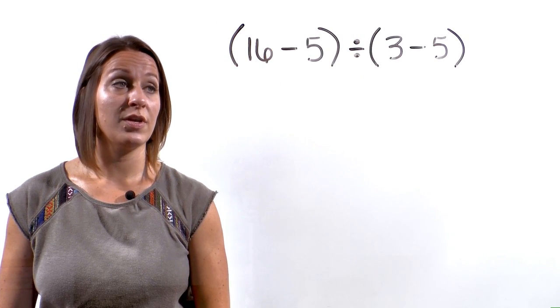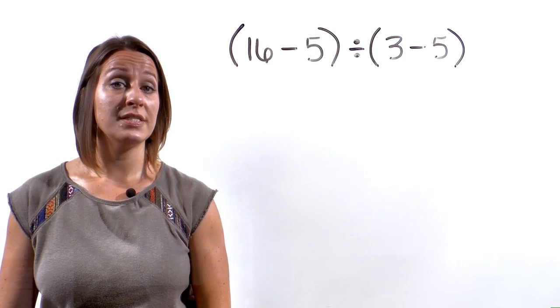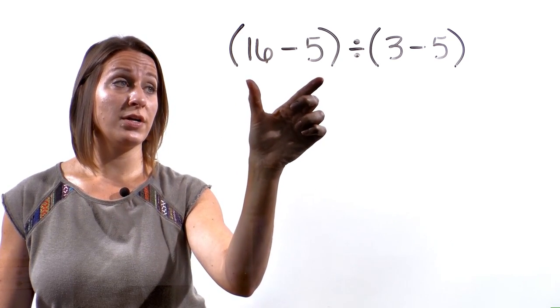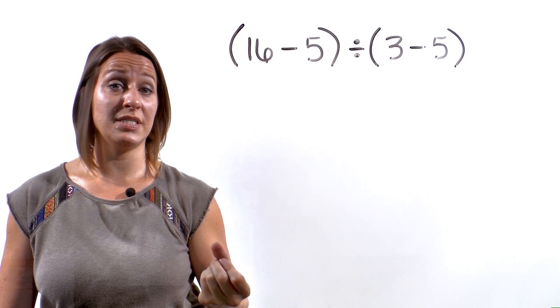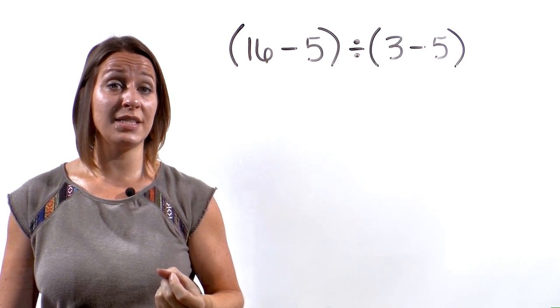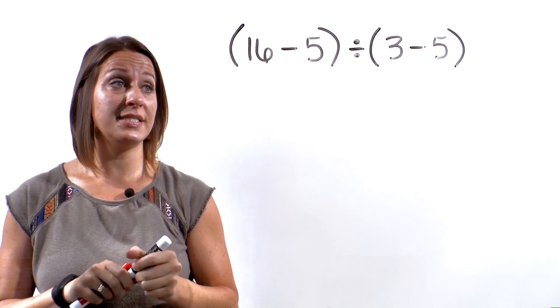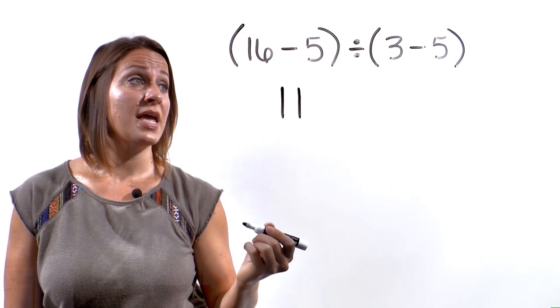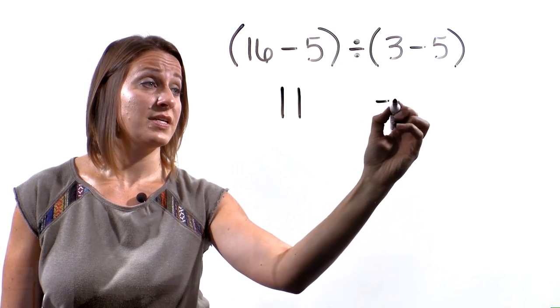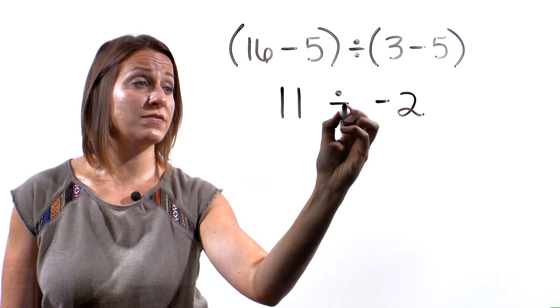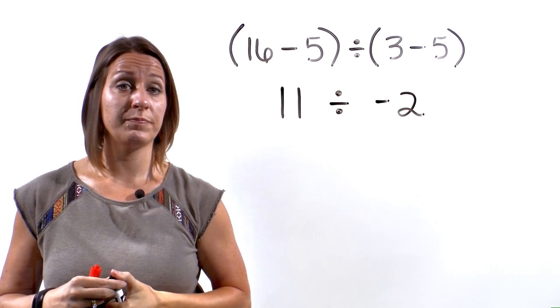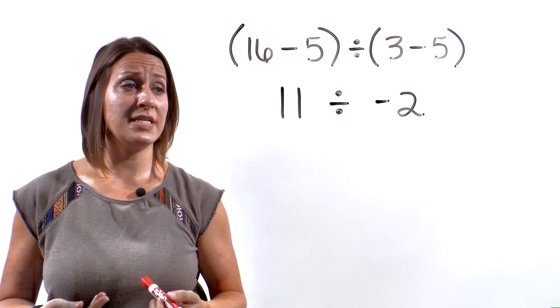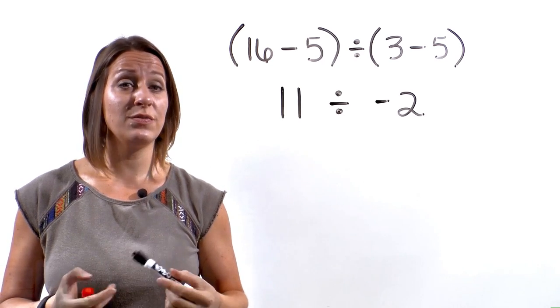Okay, take a look at this problem. We have 16 minus 5 divided by 3 minus 5. Notice each part on either side of the division sign is in a set of parentheses. So we're going to work the problem inside the parentheses first. 16 minus 5 is 11 and 3 minus 5 is negative 2. We'll put our division sign back in the middle.